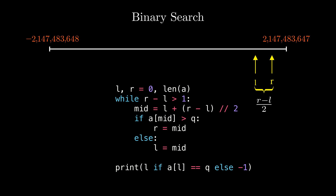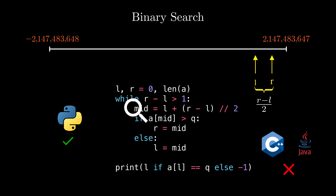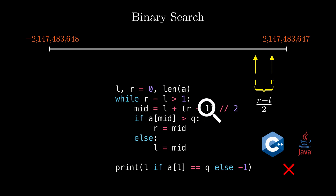Actually, the initial implementation works totally fine with languages like Python where integers are not limited to 4 bytes. But for languages like Java or C++, the code would occasionally crash, making it very hard to detect and fix.